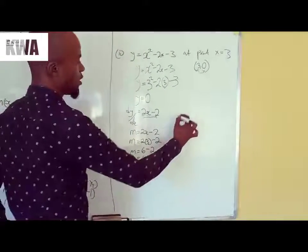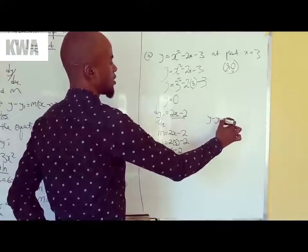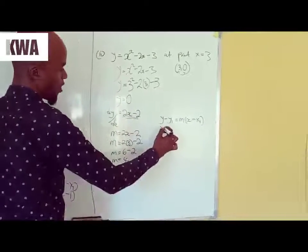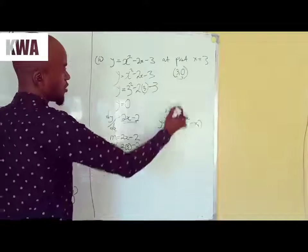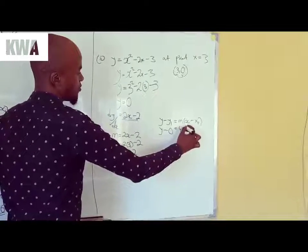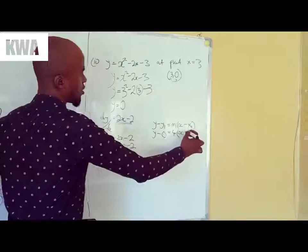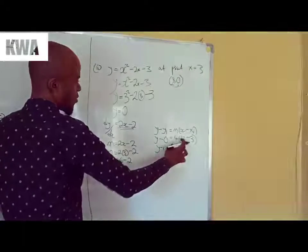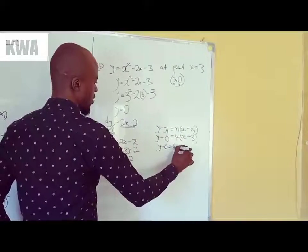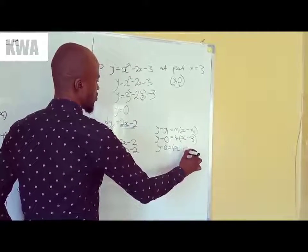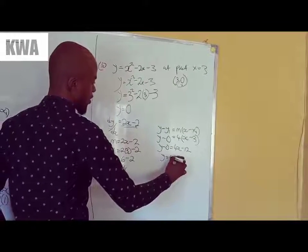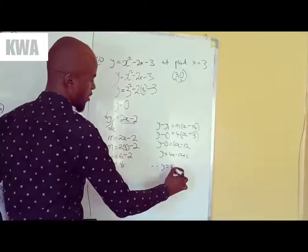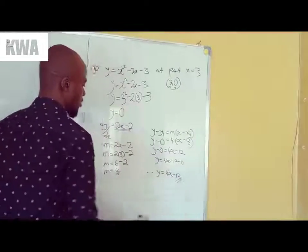Then finally, you find the equation of the tangent using the formula. You should memorize this. So I have y minus y1, 0 here. Then m is 4, x you don't write, x1 you write, 3. So y minus 0 equals, this 4 has to break this, so 4 times x is 4x, 4 times negative 3, negative 12. So y equals 4x minus 12 plus 0. So therefore, the final answer is 4x minus 12.